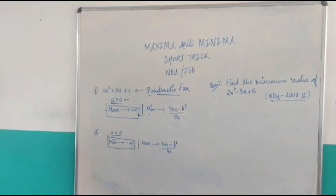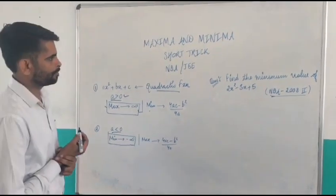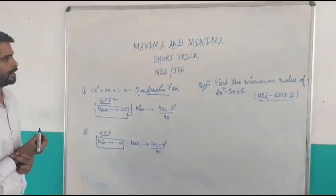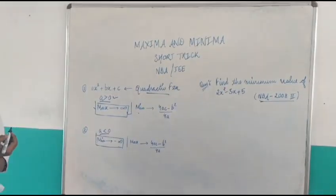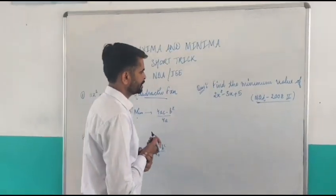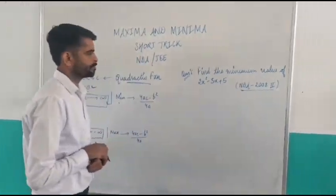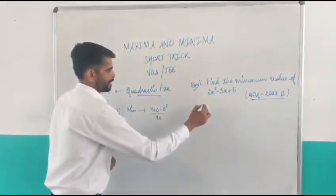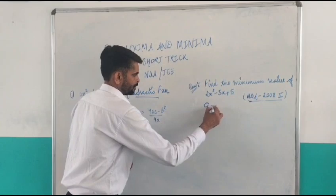So, let's take one question from NDA 2008 second. That is, find the minimum value of 2x² minus 3x plus 5.